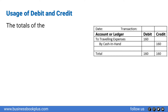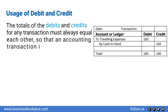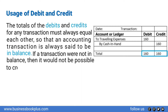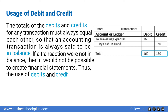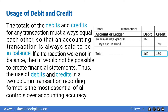The totals of the debits and credits for any transaction must always equal each other, so that an accounting transaction is always said to be in balance. If a transaction were not in balance, it would not be possible to create financial statements. Thus, the use of debits and credits in a two-column transaction recording format is the most essential of all controls over accounting accuracy.